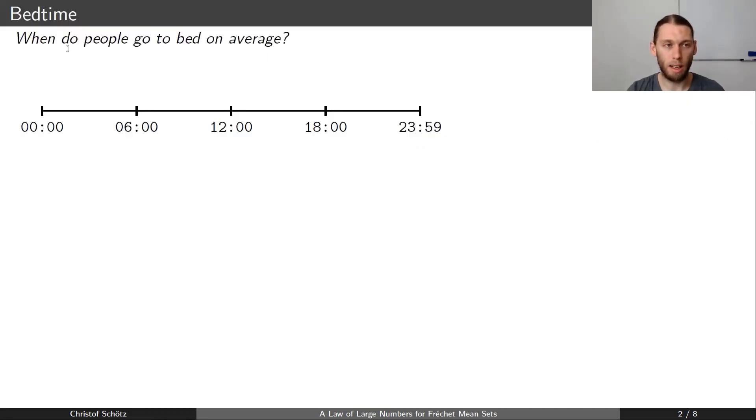As an introductory example we ask when do people go to bed on average and imagine we made a huge study where we asked two people, Alice who goes to bed at 1 and Bob who goes to bed at 11.